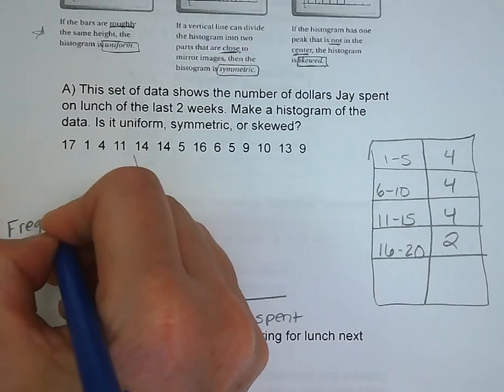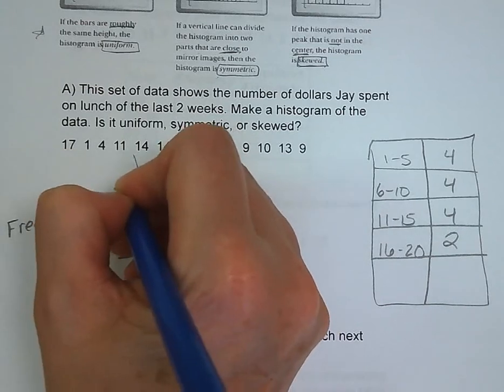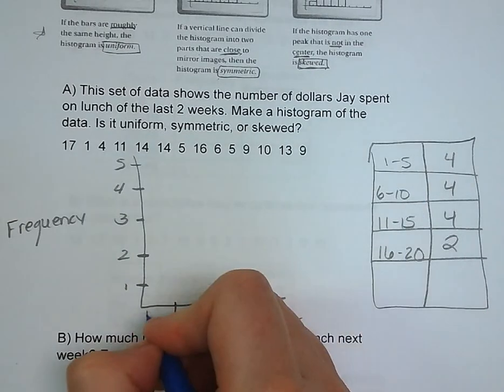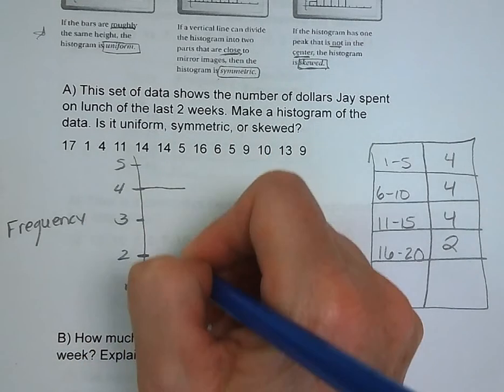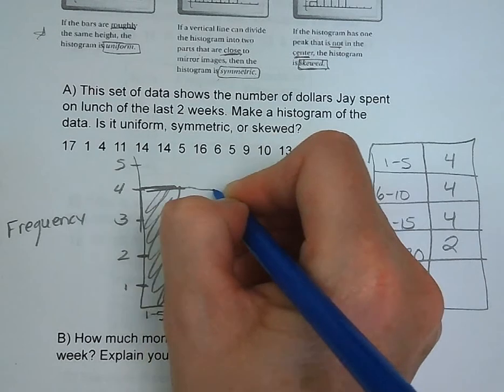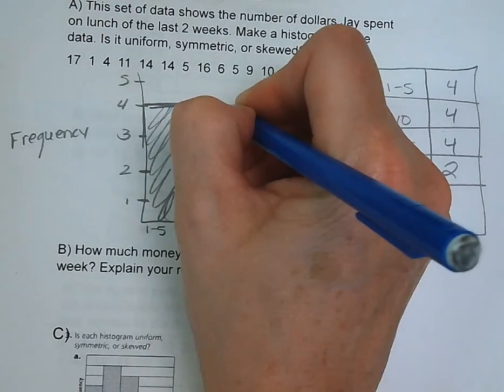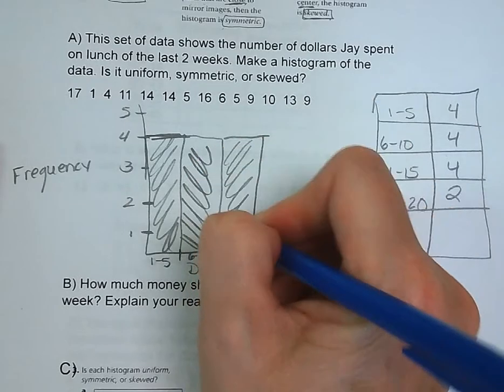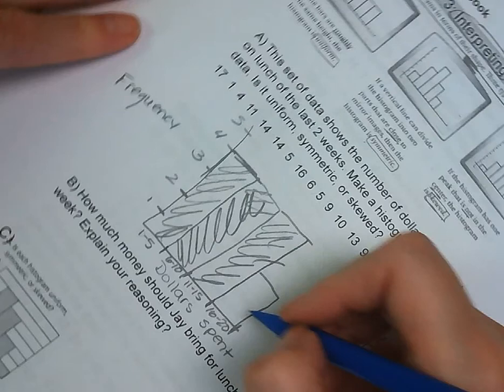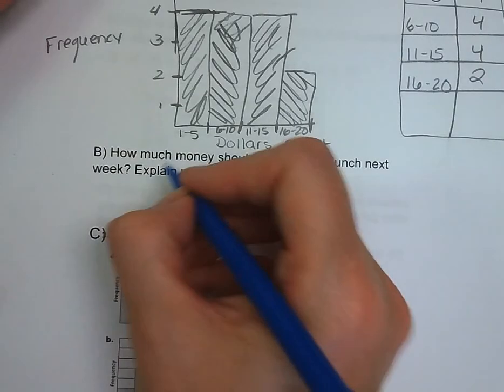Make sure that you are labeling your axes and you're putting your intervals on there. Your labels must be there. A good graph needs labels, and a good graph needs numbers. From 1 to 5, that was 4. And from 6 to 10, we also had 4. From 11 to 15, also had 4. And from 16 to 20, we had 2. So looking at this graph, to me, that looks pretty uniform. I've got 3 out of the 4 bars are the same height. So we're just going to say that is uniform.